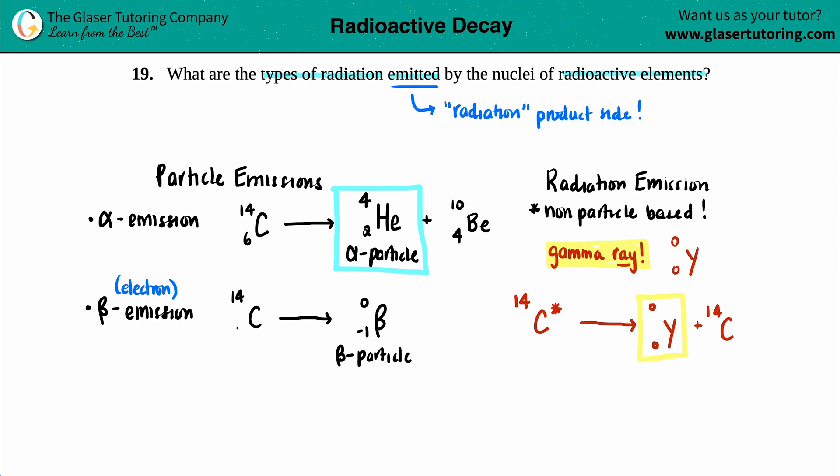But even if we do the same thing with carbon-14, the fourteen will stay on the top, but now this will turn into a seven. And who's next to carbon? It's nitrogen. So that's another one. So now we have three: alpha particles, beta particles, and gamma rays.